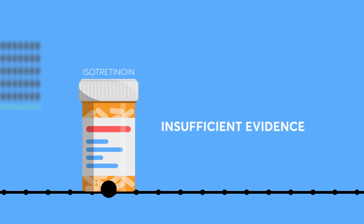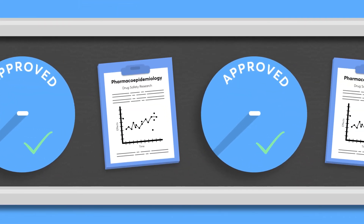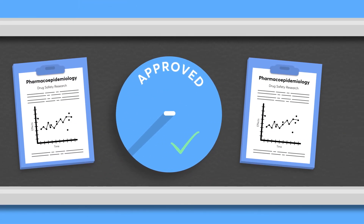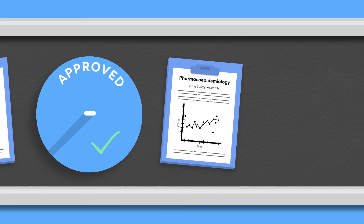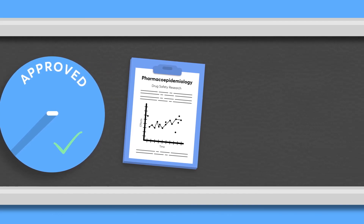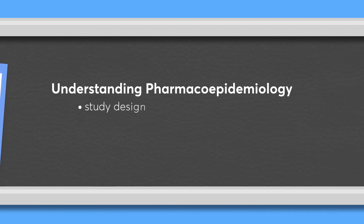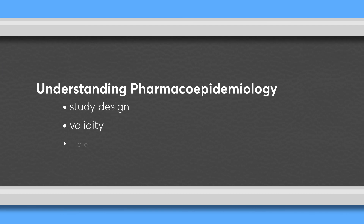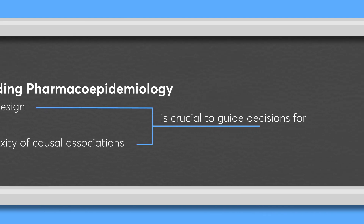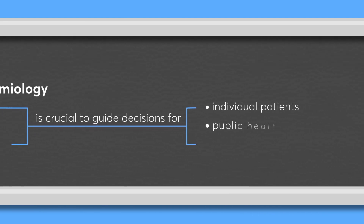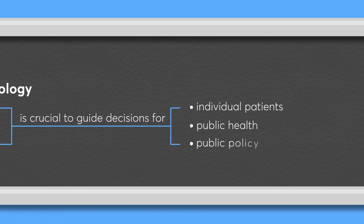New medications are being rapidly developed. Therefore, pharmacoepidemiology research is increasingly important to provide understanding of drug safety after approval. Understanding pharmacoepidemiology study design, validity, and the complexity of causal associations is crucial to guide decisions for individual patients, public health, and public policy.